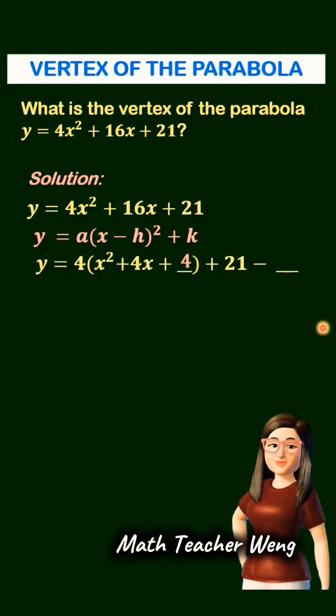Now, what's the missing number? That is 4. Why? Because 4 divided by 2 is 2 and 2 squared equals 4. So we have to subtract 16 because 4 times 4 is actually 16.